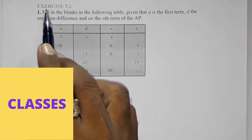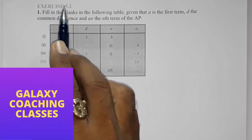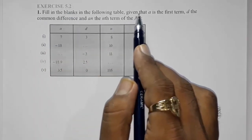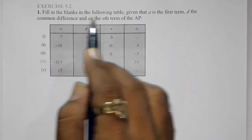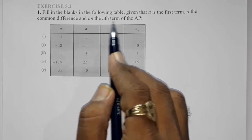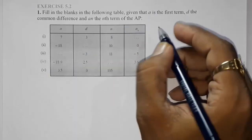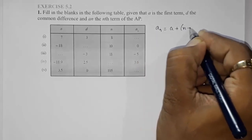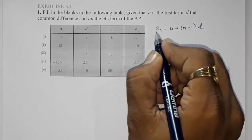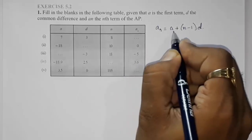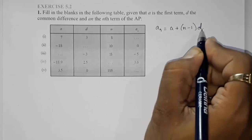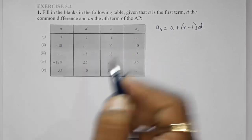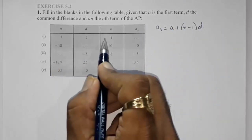Hello friends, today we are going to solve CBSE Class 10 Maths Exercise 5.2, Question number one: fill in the blanks in the following table, given that a is the first term, d is the common difference, and an is the nth term of AP. Here is the formula for the nth term of AP: an is equal to a plus n minus 1 into d. There are four terms total — an, a, n, and d — and out of those four, three numbers are given in each question.